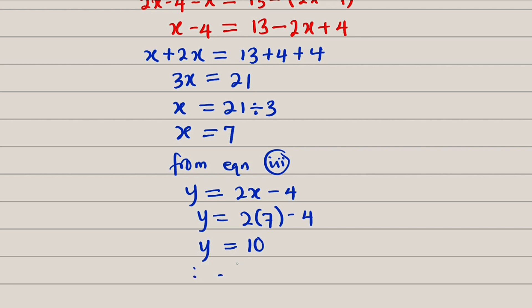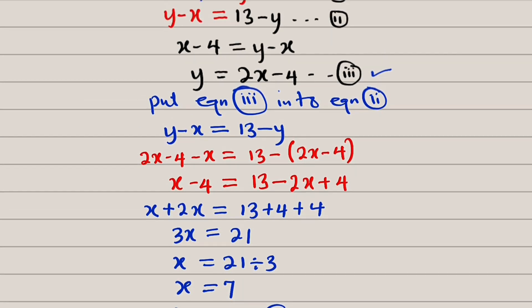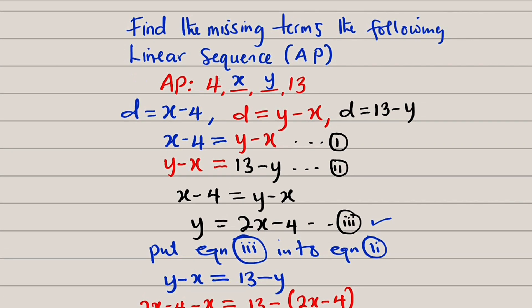And hence, we can conclude that x and y are 7 and 10 respectively. From our initial sequence, which is 4, x, y, and 13, we can replace x with 7 and y with 10. So this is 7 and this is 10.